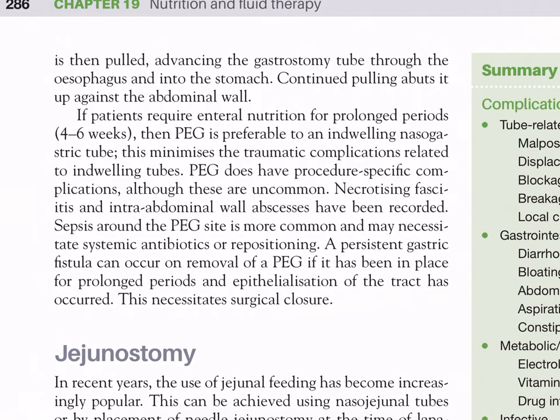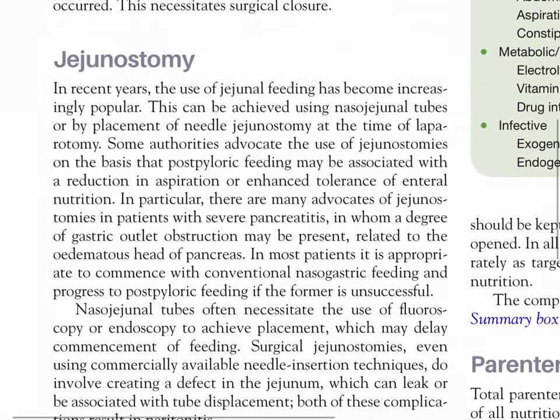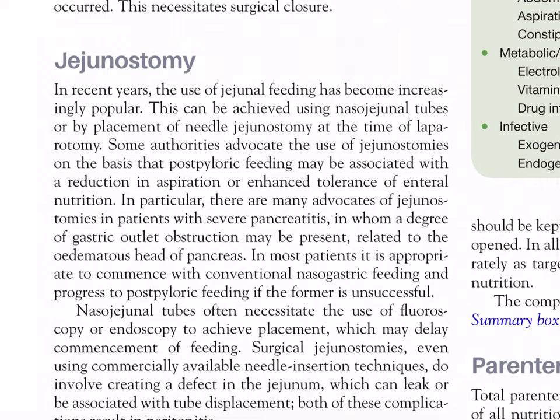If patients require enteral nutrition for prolonged periods (4–6 weeks), PEG is preferable to an indwelling nasogastric tube as it minimizes traumatic complications. PEG does have procedure-specific complications: necrotizing fasciitis and intra-abdominal wall abscesses have been recorded. Sepsis around the PEG site is more common and may necessitate systemic antibiotics or repositioning. A persistent gastric fistula can occur on removal of a PEG if it has been in place for prolonged periods and epithelialization of the tract has occurred, necessitating surgical closure.